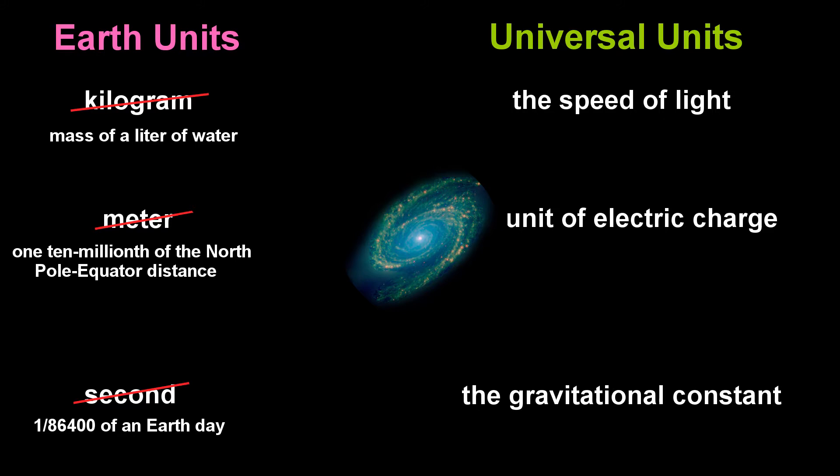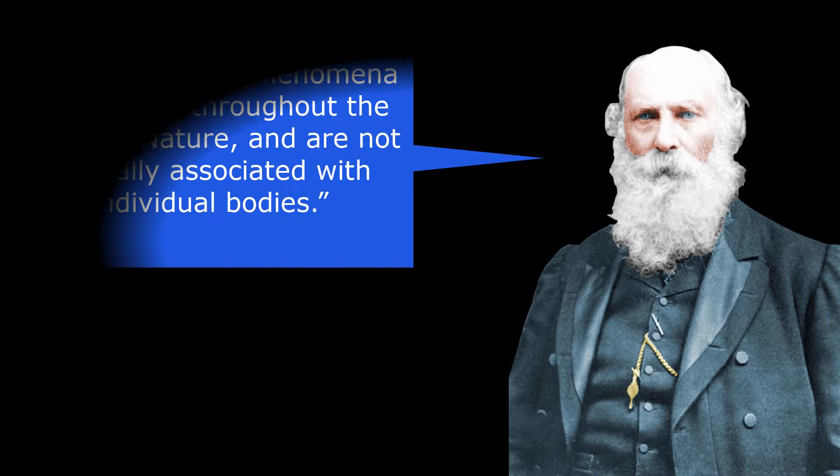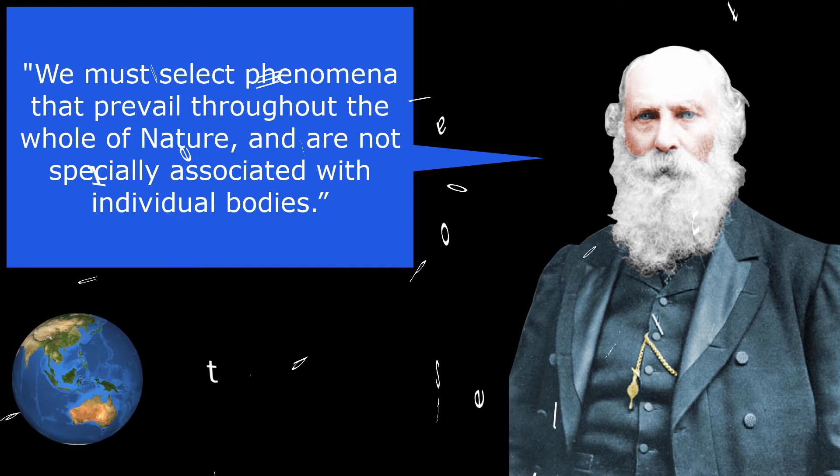The speed of light in a vacuum, electric charge and the gravitational constant are universal. Stoney proposed that measurement units in physics should be based on these, rather than meters for example, which were based on the distance from Earth's north pole to the equator.